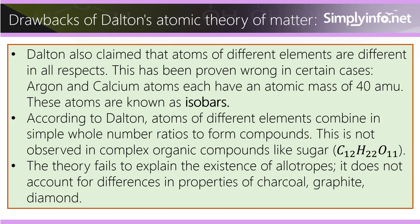This has been proven wrong in certain cases — argon and calcium atoms each have an atomic mass of 40 amu. These atoms are known as isobars. According to Dalton, atoms of different elements combine in simple whole number ratios to form compounds. This is not observed in complex organic compounds like sugar, C₁₂H₂₂O₁₁.